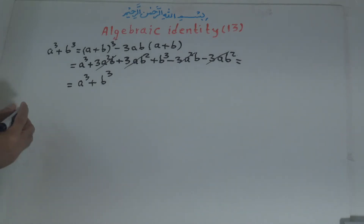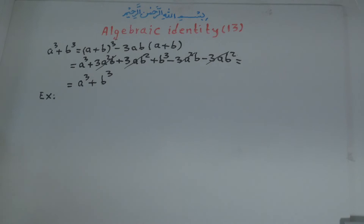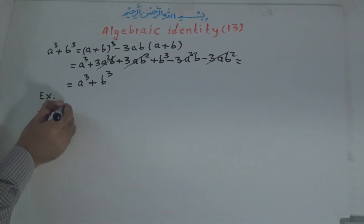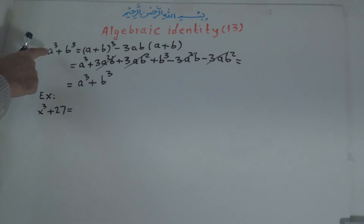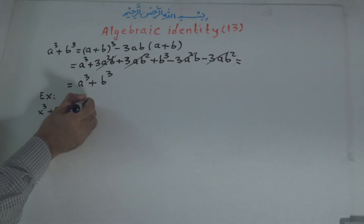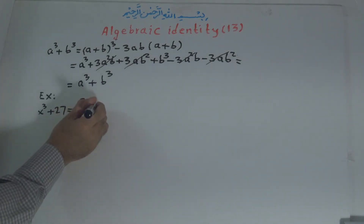Now we solve an example. The example is: x to the power of 3 plus 27. We should bring this to the form a to the power of 3 plus b to the power of 3. Here a to the power of 3 is x to the power of 3, and b to the power of 3 is 27. We know that 27 is 3 times 3 times 3, which means 3 to the power of 3.